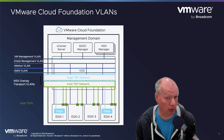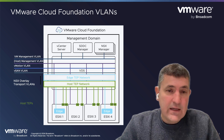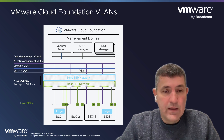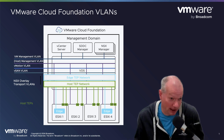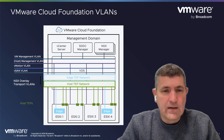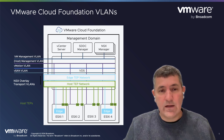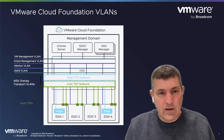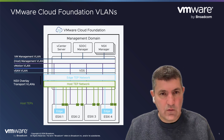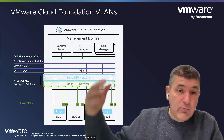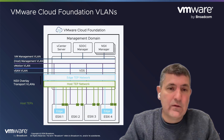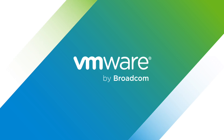Two of those VLANs need to be routable. The management VLAN and the VM management VLAN need to be routable because those are components within the SDDC that need to talk out to other things on your corporate network. For example, if a vSphere administrator wants to get to vCenter, it needs to be routable. Things like vMotion, vSAN, and the overlay networks are internal to the cluster — host A talking to host B talking to host C — and don't need to route out. So those two need to be routable; the others can use private IPs.